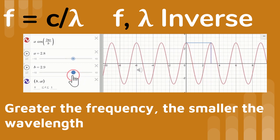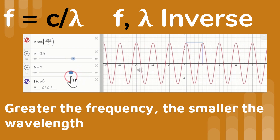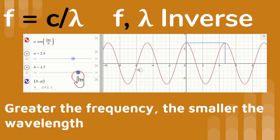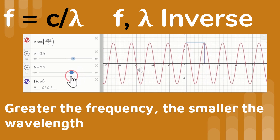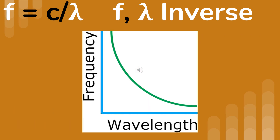This means that the greater the frequency, the smaller the wavelength, and the greater the wavelength, the smaller the frequency. This is the shape for the plot of frequency and wavelength. Notice when the wavelength is big, the frequency is small, and when the wavelength is small, the frequency is big.